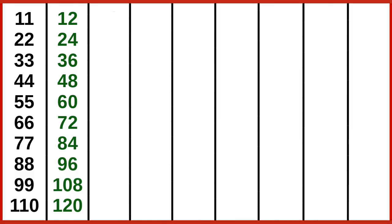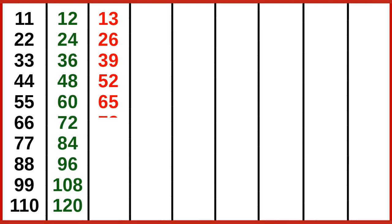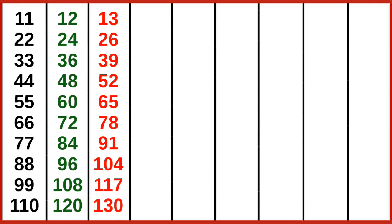13 ones are 13, 13 twos are 26, 13 threes are 39, 13 fours are 52, 13 fives are 65, 13 sixes are 78, 13 sevens are 91, 13 eights are 104, 13 nines are 117, 13 tens are 130.